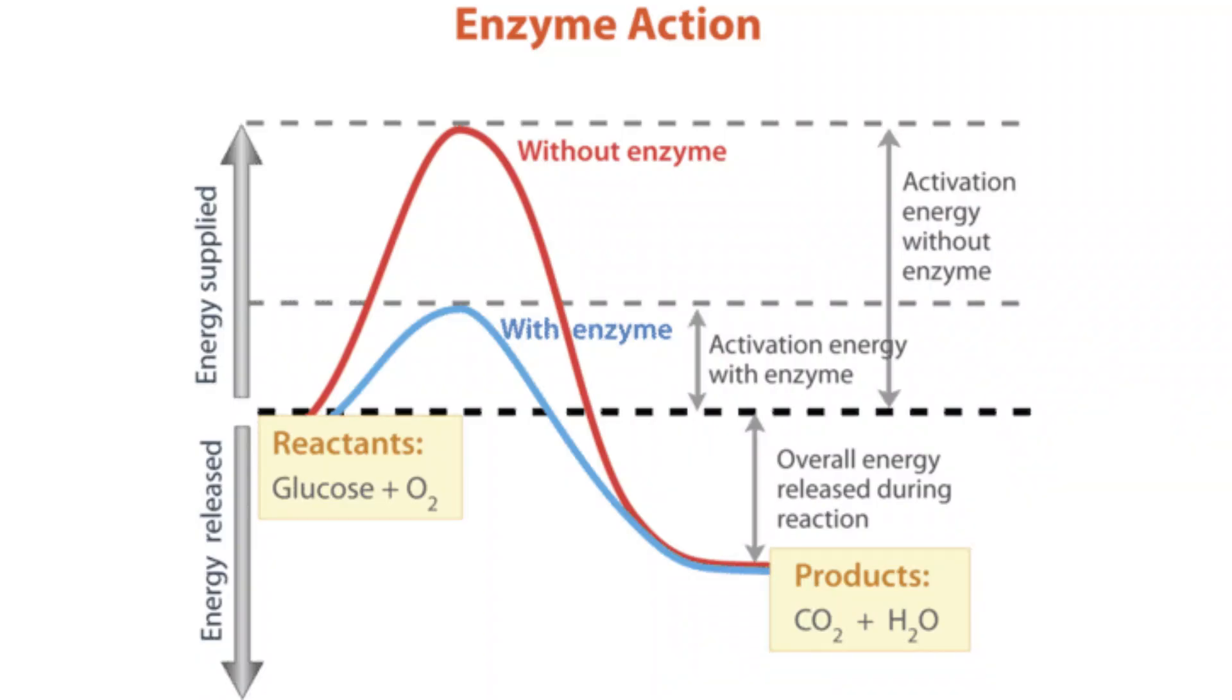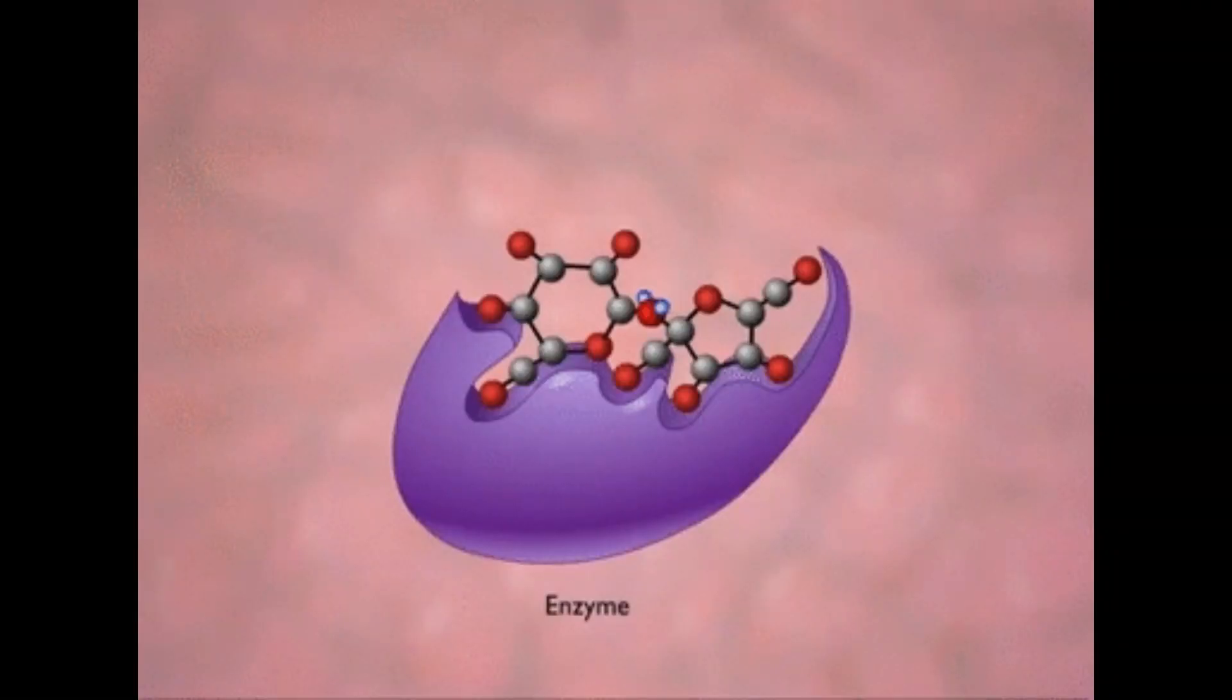Enzymes speed up chemical reactions by lowering the activation energy. So they make the reactions faster and therefore more efficient. In order to make this happen, the enzyme holds the substrates in optimal positions for the reaction to occur. It also provides the optimal environment for the reaction.